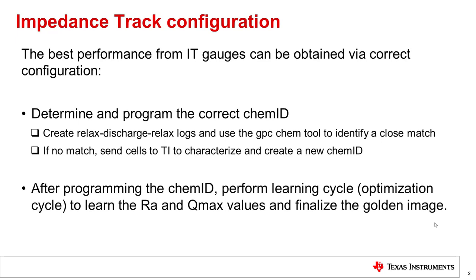To determine the correct ChemID, you can do a test and create a RELAX discharge RELAX log, then pass these logs through the online GPC Chem tool to identify a close match. If a close match is not identified, then the cells need to be sent to TI for characterization, and a new ID will be created for you.